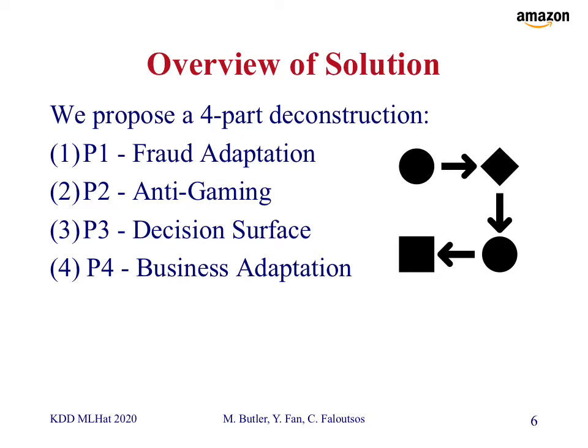The solution is broken into four subproblems. Part one is fraud adaptation: in a supervised learning environment, how do we update a current model once we receive new observations? Part two is anti-gaming: given that observations come from an adversarial and non-stationary environment, how do we deal with that bias and noise when updating our model? Part three is the decision surface: once we have a model, how do we use it to decide whether to investigate or pass an order? Part four is business adaptation: given that business constraints can change rapidly and unpredictably, how do we optimally move from one solution to another without recomputing everything?